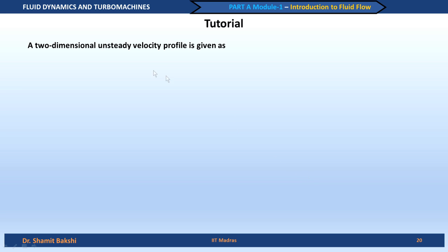The third problem is related to flow visualization — specifically streamlines and pathlines. We are given a velocity field. This is a two-dimensional velocity field because the z-direction velocity is zero and the x and y velocity components are independent of z. It is also an unsteady field because the x and y velocity components decrease as time increases.